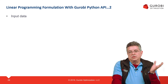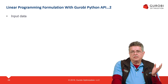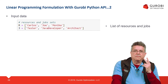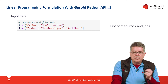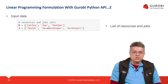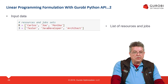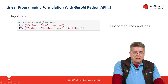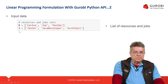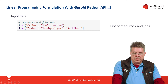Then you need to define your data. In this particular RAP problem, the data was very simple. We have two sources of data: one related to resources and the other related to jobs. For resources, we define a list R containing Carlos, Joe, and Monica. Another list J contains the jobs: Tester, Java Developer, and Architect.